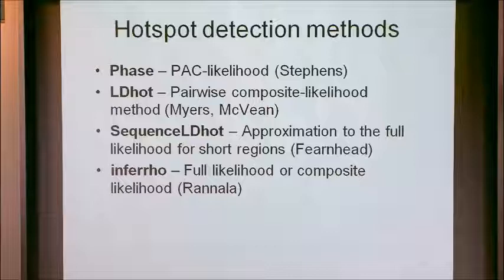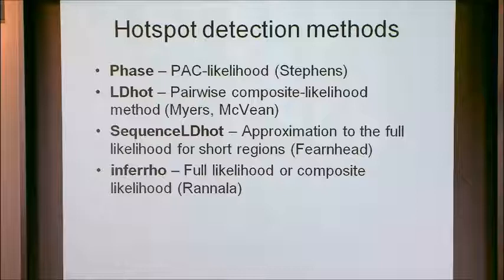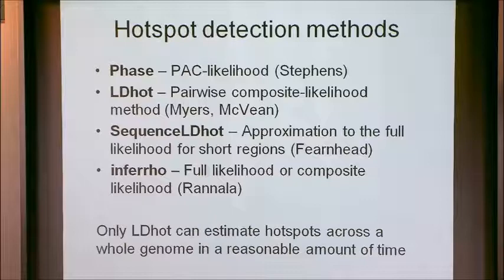There are several methods out there for detecting these hotspots. They all, in practice, involve some kind of approximation to likelihood. We might know what we want to do in theory to estimate recombination rates under a full likelihood model, but those are not computationally feasible. It turns out only one of these methods can estimate hotspots across a whole genome in a reasonable amount of time — and reasonable in this case means a hundred years of computational time.